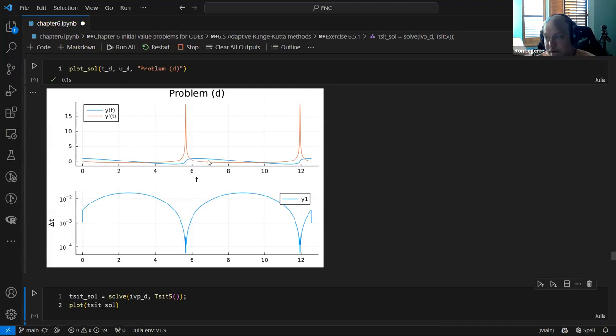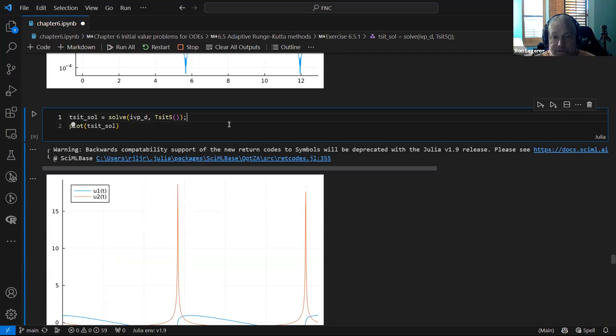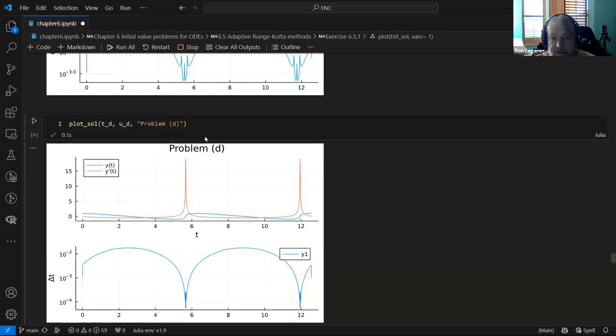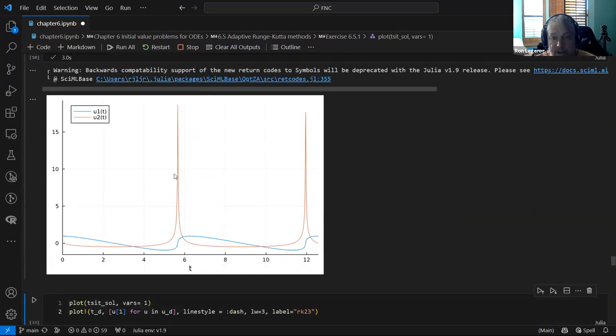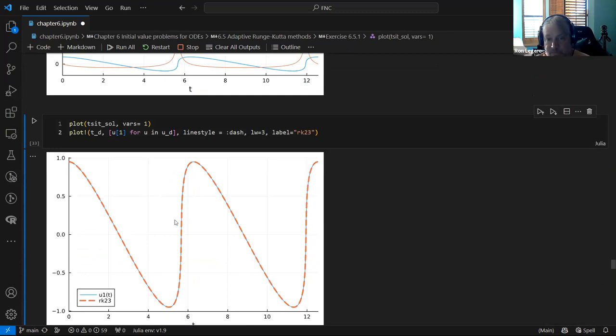So the only thing I can compare it to is just use the TSIT5, which is the currently best one to use for these types of problems according to the Julia differential equation package. So I did that and it looks similar. I'm scrolling around a lot. It looks similar. I don't know if this is a plotting thing or not where the derivative goes up higher. Maybe it's got better points in there. But as far as the Y itself, this plots both of them together and they're spot on. So our adaptive RK23 algorithm seems to be doing just fine on this problem anyway.